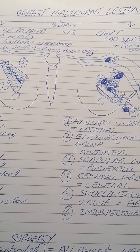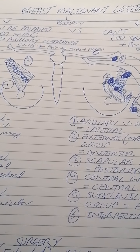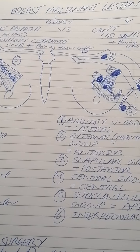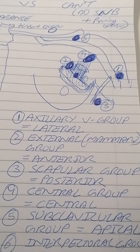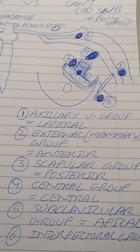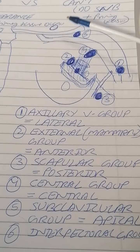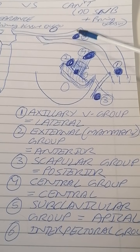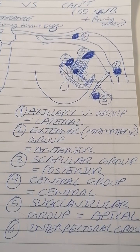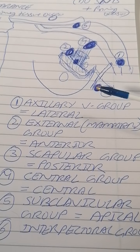Let's talk about the axillary lymph node groups. As we know, there are around six groups of axillary lymph nodes. Each group has around four to six or four to seven lymph nodes, except the apical lymph node group, which can have a maximum of 12 to 13 lymph nodes.